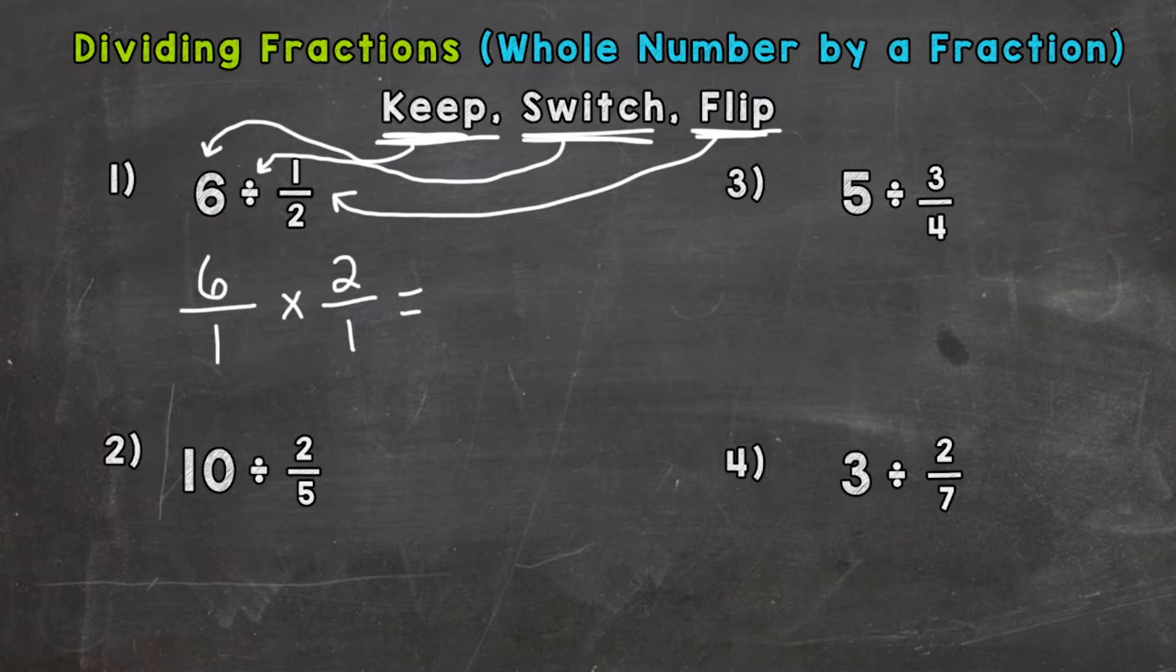So our problem's all set up, and now we just multiply straight across. 6 times 2 is 12, and 1 times 1 is 1. So we have 12 over 1, which is 12.